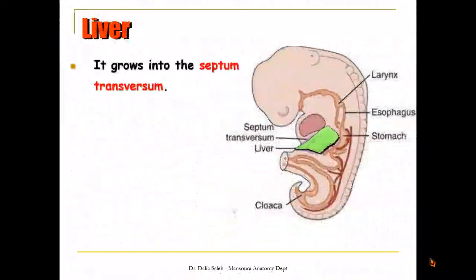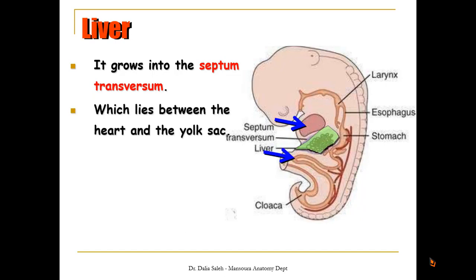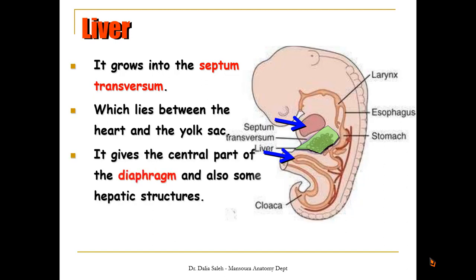This liver bud will grow into the septum transversum, which is a plate of mesoderm that lies between the heart and the yolk sac. The septum transversum, if you remember, will give the central tendon or central part of the diaphragm and also shares in the formation of certain structures inside the liver.